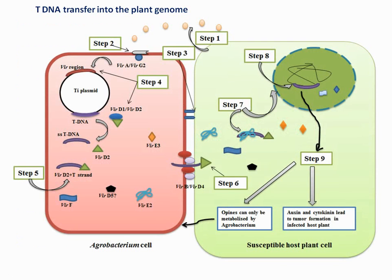Now we will discuss how T-DNA is transferred into the plant. There is a release of acetosyringone, a phenolic compound from the wound site of the plant, which is sensed by Agrobacterium. VirA protein is a kinase protein in the inner bacterial membrane that senses the acetosyringone and becomes phosphorylated. VirA then activates VirG, and VirG activates the other Vir genes.